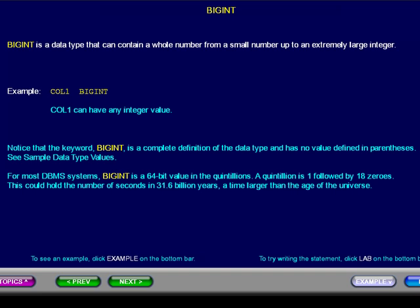A quintillion is 1 followed by 18 zeros. This could hold the number of seconds in 31.6 billion years, a time larger than the age of the universe.